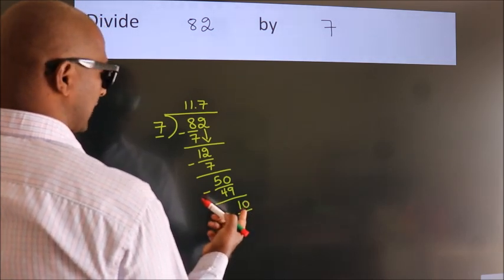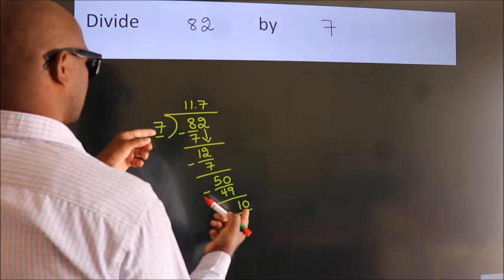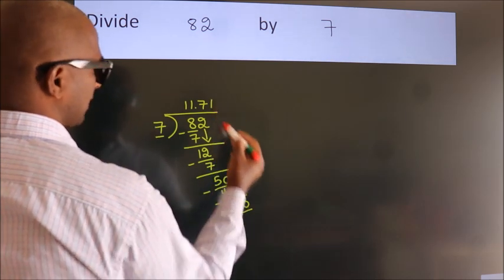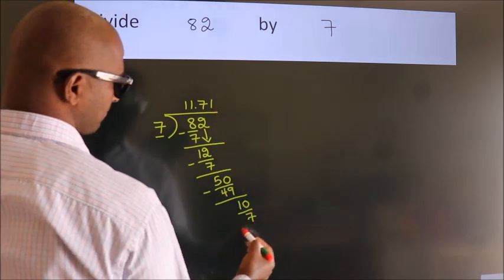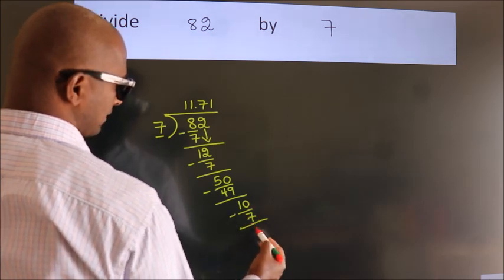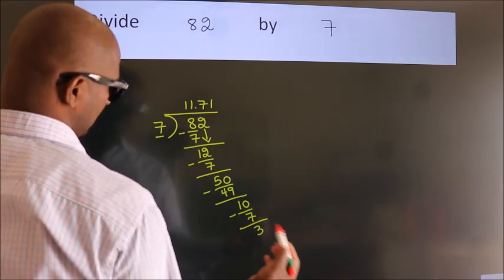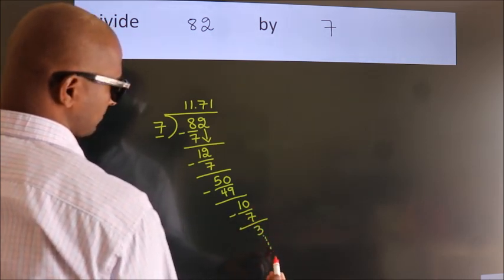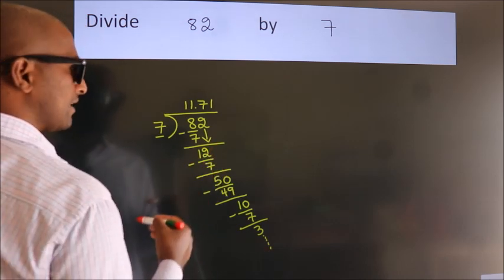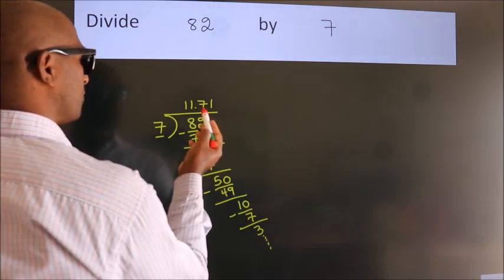A number close to 10 in the 7 table is 7 once 7. Now, we subtract. We get 3. And the division continues. It is enough if we do up to 2 decimal places.